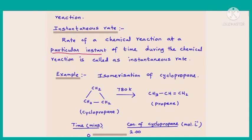Rate at a particular instant is instantaneous rate; rate for the entire time period is average rate. For example, if you measure rate between 10 to 20 minutes or between 5 to 10 minutes, those are instantaneous rates. Now let us understand the difference between average rate and instantaneous rate by taking an example.